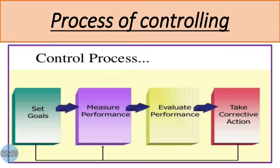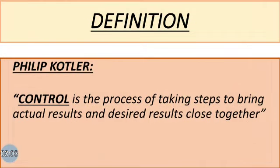The third stage is 'evaluate performance,' where managers will evaluate what is the difference between actual performance and standard performance — what they decided and what they achieved. The last stage is 'take corrective action,' where corrective measures are taken by the manager by comparing actual performance with standard performance. Through this, they will come to know the loopholes and reasons why they are not able to achieve the desired set targets, and they will take immediate corrective action.